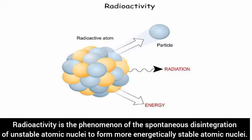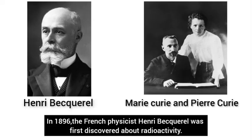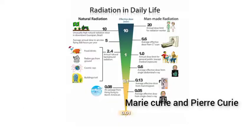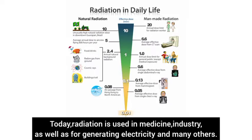Radioactivity is the permanent or spontaneous linear distinguishing force and stable atomic nuclei to form more energetically stable atomic nuclei. In 1896, the French physicist Henry Pecure was first discovered about radioactivity, and then Marie Curie and her husband Henry Curie researched on the radiation phenomenon discovered by radiation. Today, radiation is used in medicine industry as well as for generating electricity and many others.